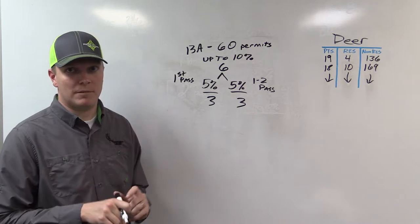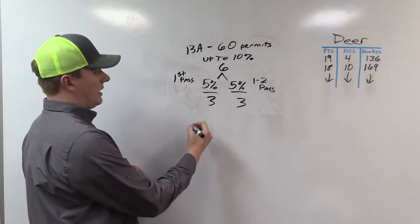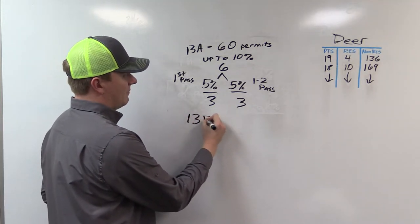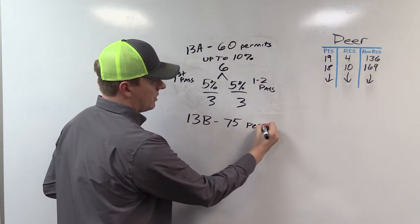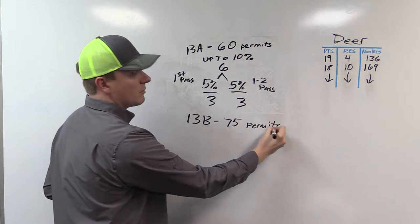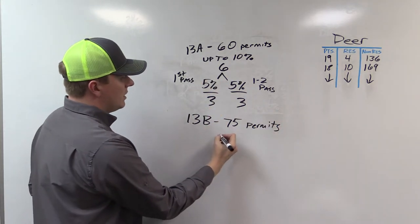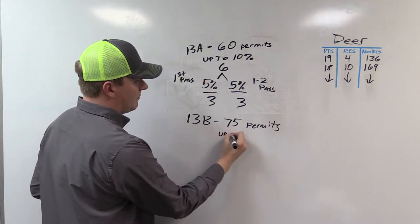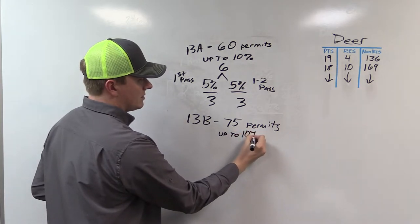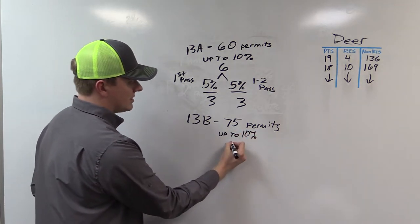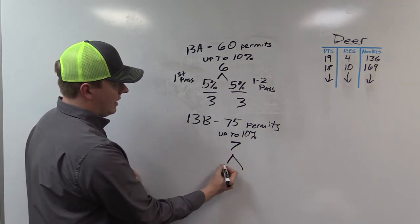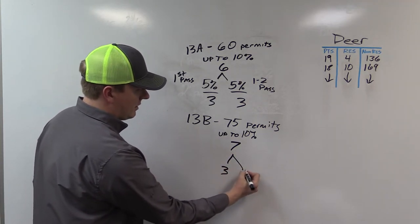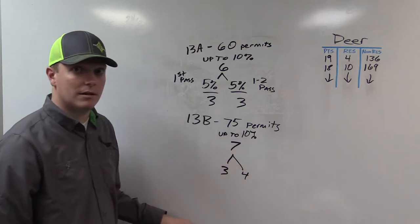This is the big change. Okay, so now you look at, let's say, 13B. There's 75 permits. This is the number one choice. These are both rifle hunts, mind you. So we still get our up to 10% as non-residents. Okay, so that's 7 permits. The way that I'll divide that out is 3 and 4 permits.